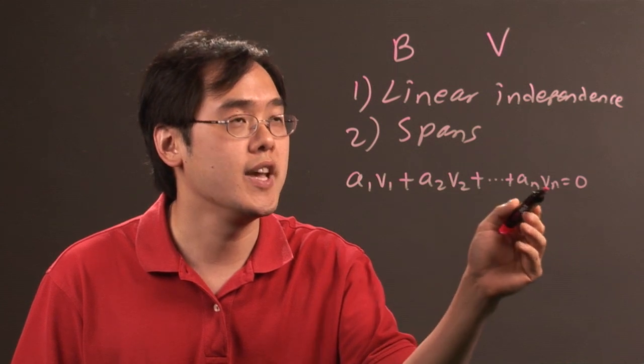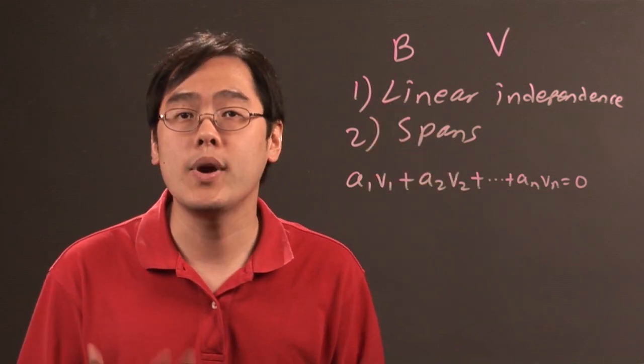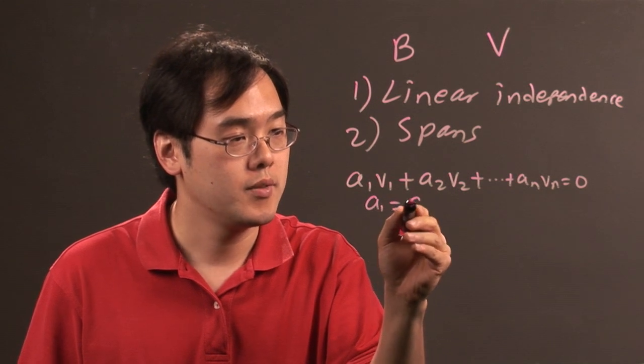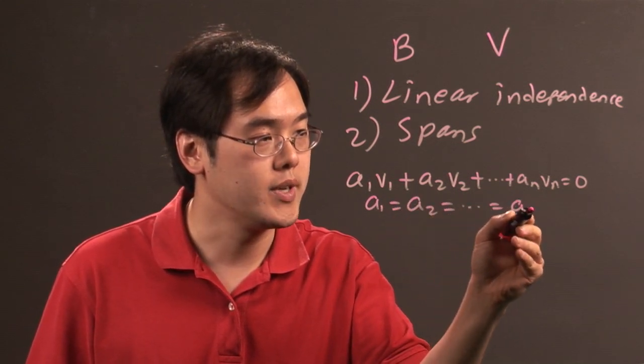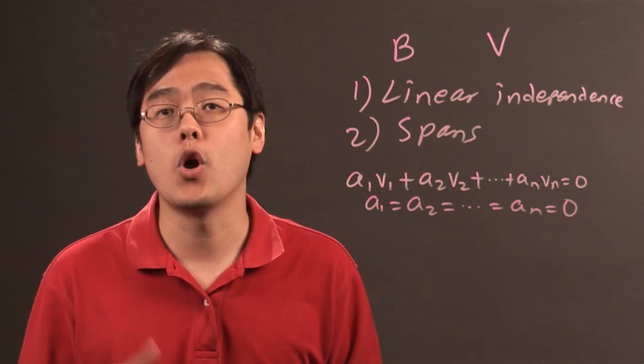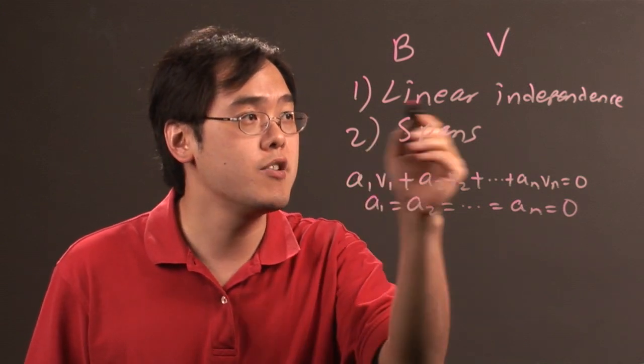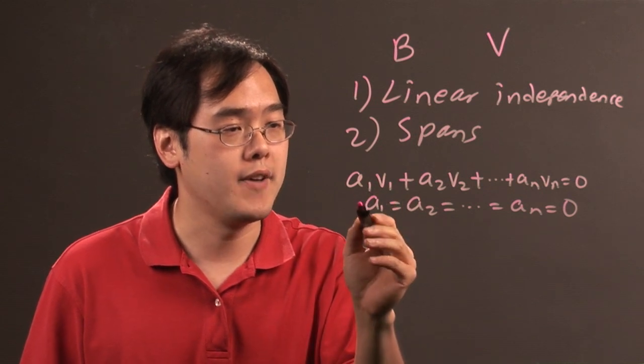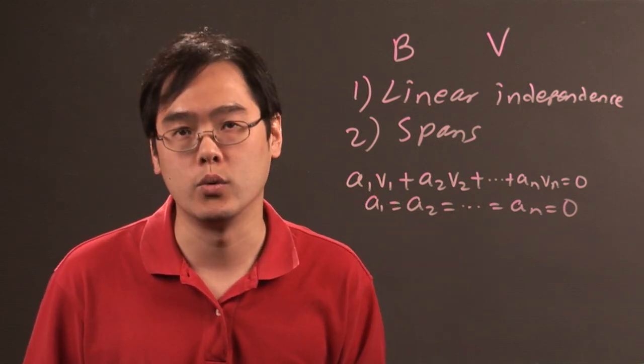where v₁, v₂, ..., vₙ are elements in B. For linear independence, the only way this equation can be true is when all the constants a₁, a₂, all the way to aₙ equal zero.